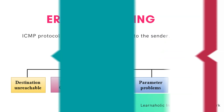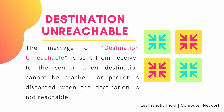Let's start with destination unreachable. The destination unreachable message is sent from the receiver to the sender when the destination cannot be reached, or the packet is discarded when the destination is not reachable.